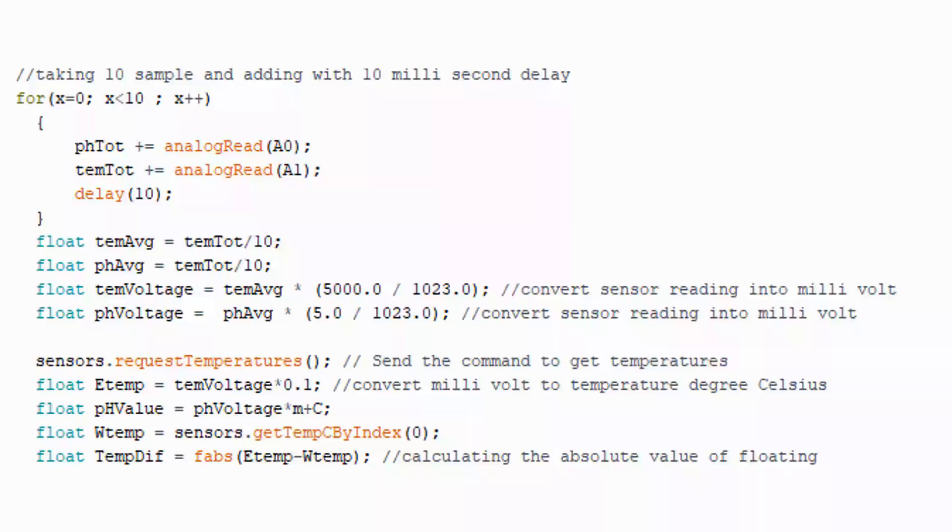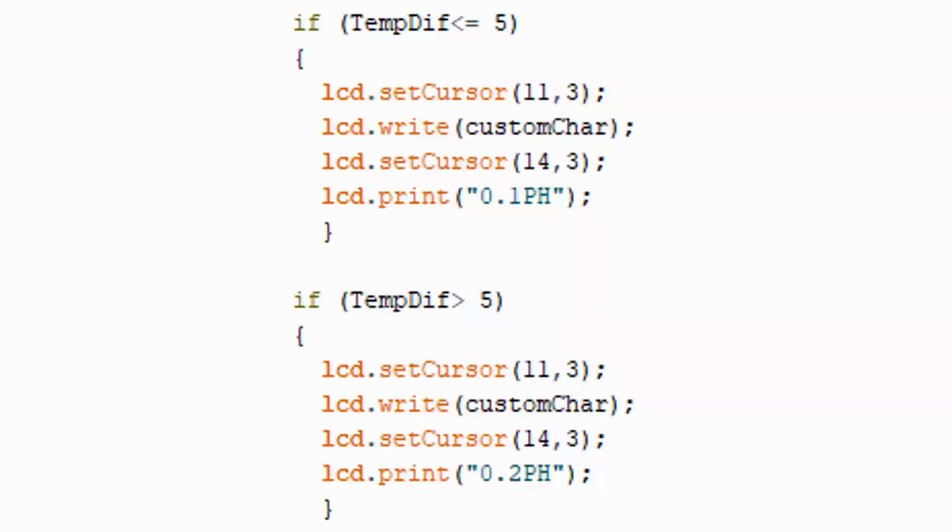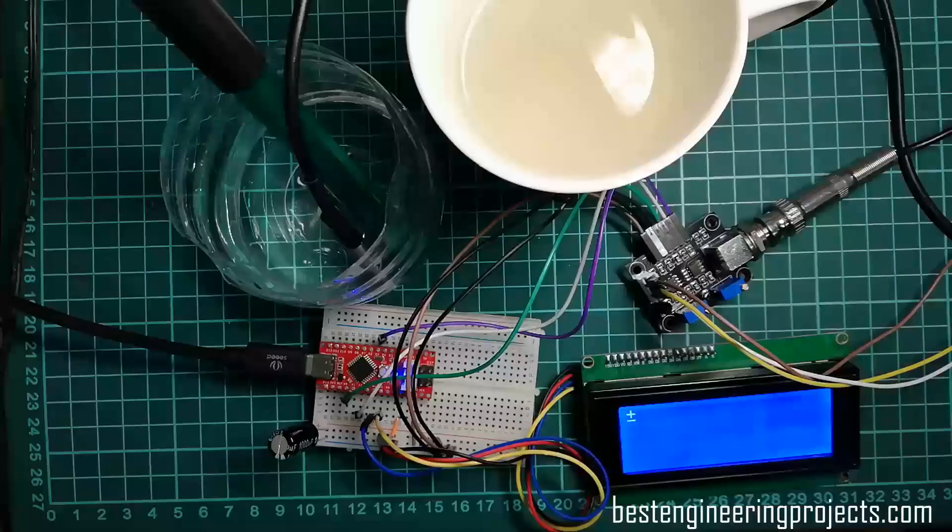Later, we compare temperature of surrounding and solution and further calibrate the pH value. According to the datasheet of electrode, if the temperature difference between surrounding and liquid solution is less than or equal to 5 degrees Celsius, then there would be tolerance of 0.1 pH, that is plus minus 0.1 pH. Similarly, if the temperature difference between surrounding and solution is more than 5 degrees Celsius, then there would be tolerance of 0.2 pH, that is plus minus 0.2 pH.